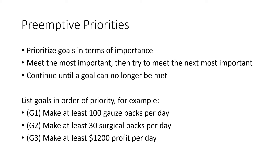Here's one way of going about it: preemptive priorities, where you put your goals in order of importance. Goal one is most important, goal two is second, and goal three is third. Then we repeatedly solve our linear program adding one goal at a time. If we go back to the client and say here are your three objectives — put them in order of importance — maybe they list 100 gauze packs per day as first, 30 surgical packs per day as second, and profit as third most important. Now that we have priorities, we can start working with them.